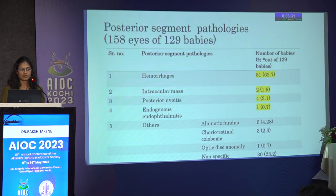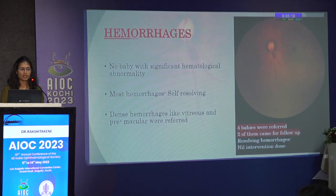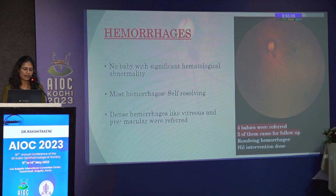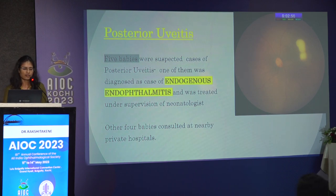158 eyes of 129 babies had posterior segment pathologies, with hemorrhage as the most common finding. Two babies had intraocular mass, four had posterior uveitis, and one had endogenous endophthalmitis. None of the babies with hemorrhage had significant hematological abnormality; most hemorrhages were self-resolving. Dense vitreous or premacular hemorrhages were referred to a higher center — four were referred, two came for follow-up, and as hemorrhages were resolving, no intervention was done. Five babies were suspected of posterior uveitis; one was diagnosed with endogenous endophthalmitis and treated under neonatologist supervision.